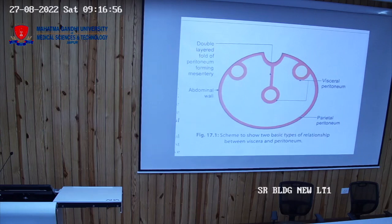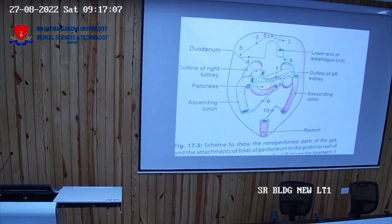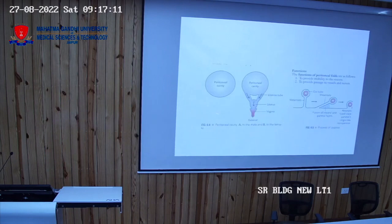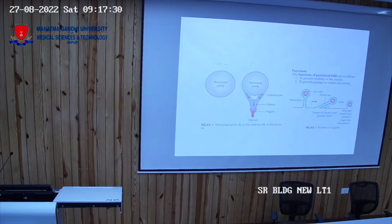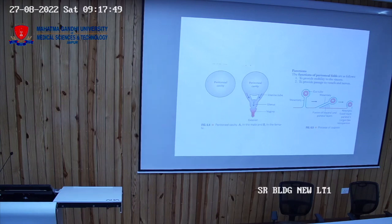There is a difference between the peritoneal cavity in male and female. In the male, the peritoneal cavity is a closed sac. In the female, the peritoneal cavity opens outside by means of the uterine tubes, from the uterus, and also from the vagina. That is the reason infections in females are very common.